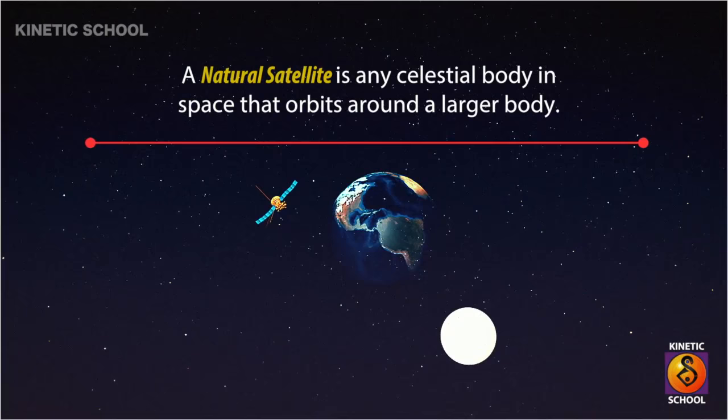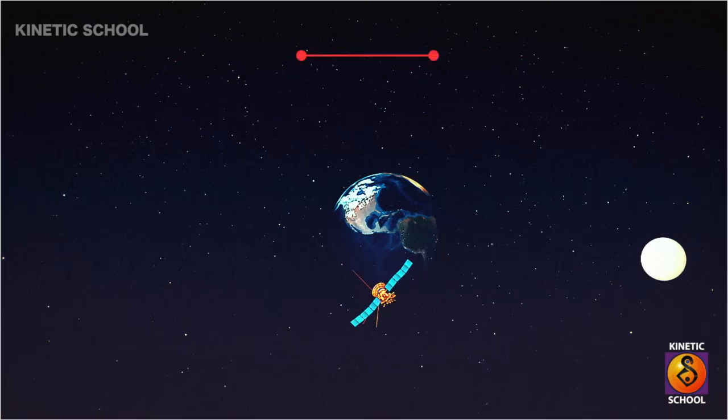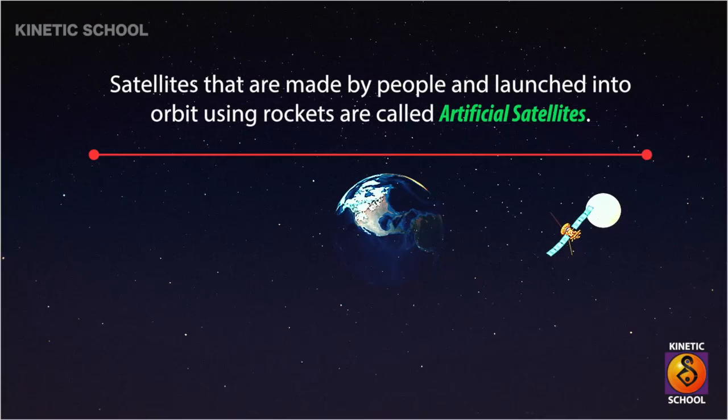A natural satellite is any celestial body in space that orbits around a larger body. Satellites that are made by people and launched into orbit using rockets are called artificial satellites.